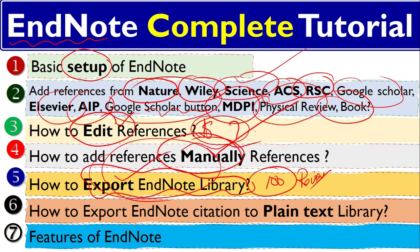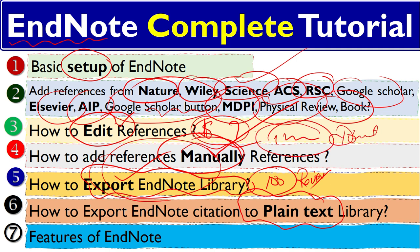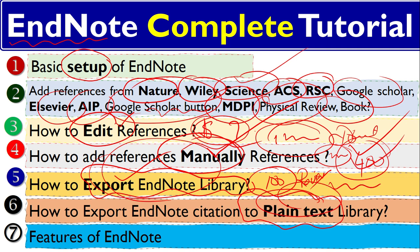The sixth step is how to export EndNote citations to plain text. This is important because when you are writing a thesis and printing, having EndNote active causes a lot of problems. For example, if your thesis has 400 references it is updating all the time. So you have to convert it to plain text so it will not cause any problems.